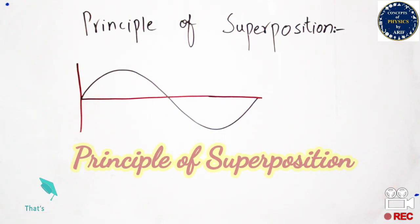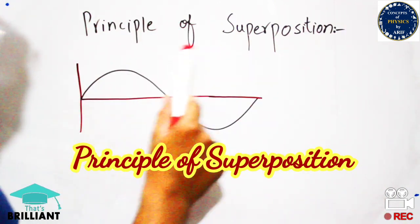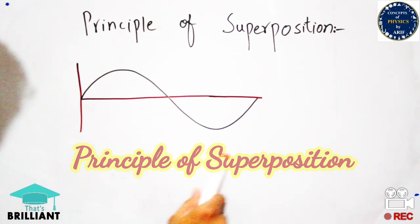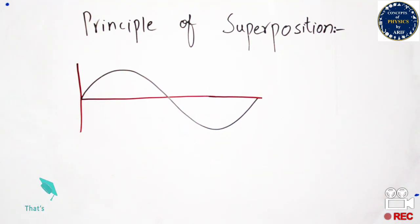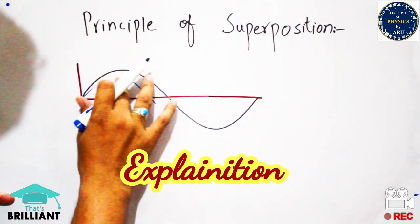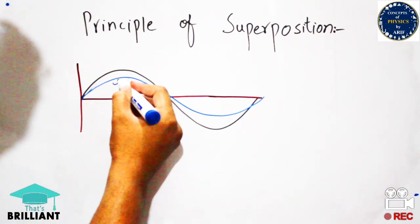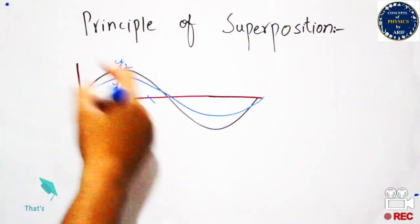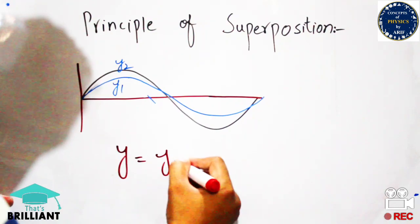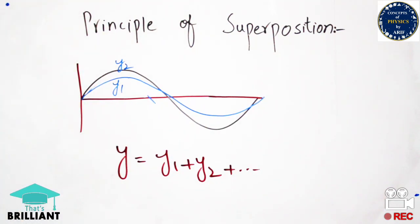Hi guys, welcome to my YouTube channel. In this video we will briefly discuss the principle of superposition. A sinusoidal wave is produced by applying some force or tension. We have two waves, wave 1 and wave 2. The magnitude of wave 1 is y1 and the magnitude of wave 2 is y2. The principle of superposition states that y = y1 + y2, or the sum of all peak values of the waves.